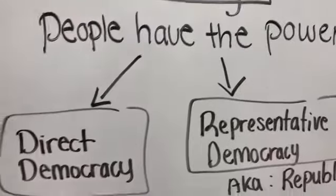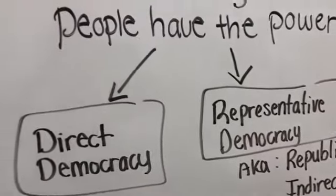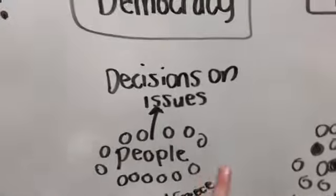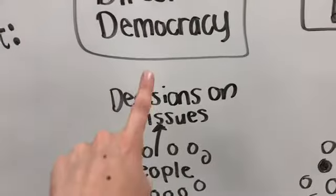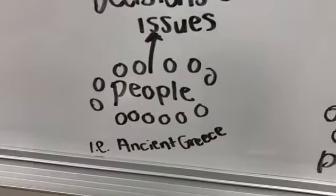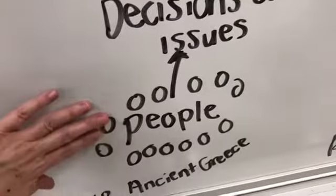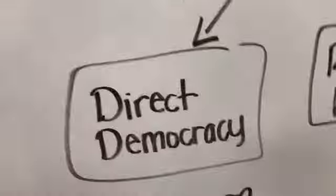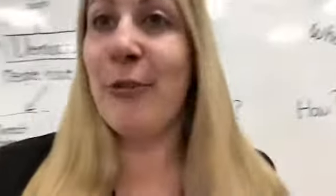There are two types of democracies. The first one is called a direct democracy, and that is when all the people get together and they make decisions directly on issues. That's what ancient Greece was like — the male citizens would get together in the town square and make decisions directly. That's why it's called direct democracy.